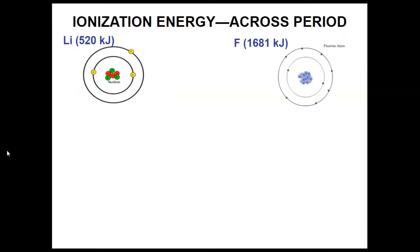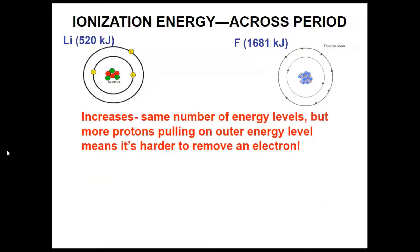As we go across a period, the ionization energy increases. Think back to atomic radius — across a period, the energy levels stay the same but the protons increase. That's also a factor here. Ionization energy increases because I have the same number of energy levels but more protons pulling on the electrons in the outer energy level, which means it's much harder to remove an electron.